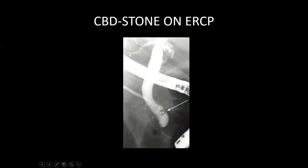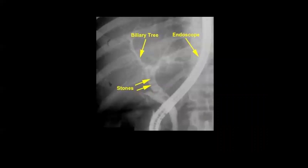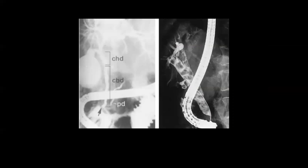Here we have another example where the endoscope and contrast outline the common bile duct. There are multiple filling defects in the common bile duct suggesting multiple calculi — this is the diagnostic component of ERCP. Another example shows a normal common bile duct and pancreatic duct with contrast outlining these areas including the gallbladder and intrahepatic biliary channels. Here you can see the endoscope and dilated common bile duct with multiple low-density areas suggesting multiple calculi filling the CBD causing obstruction.